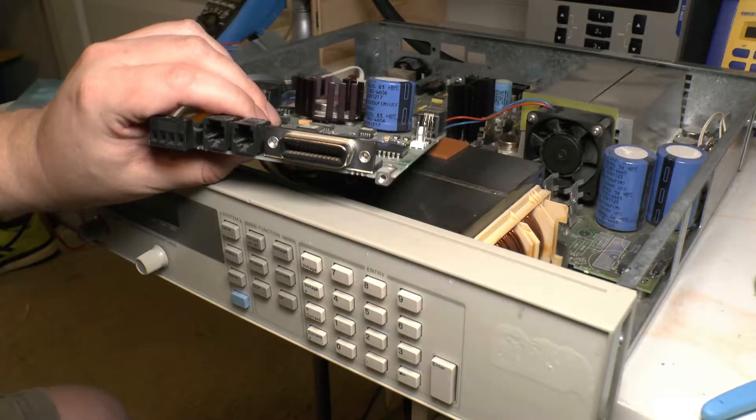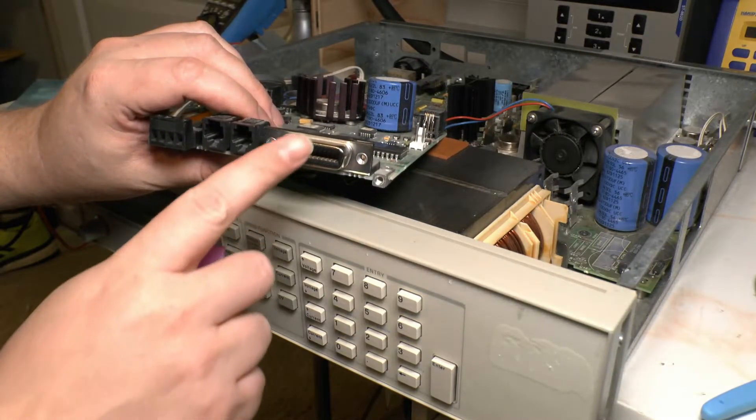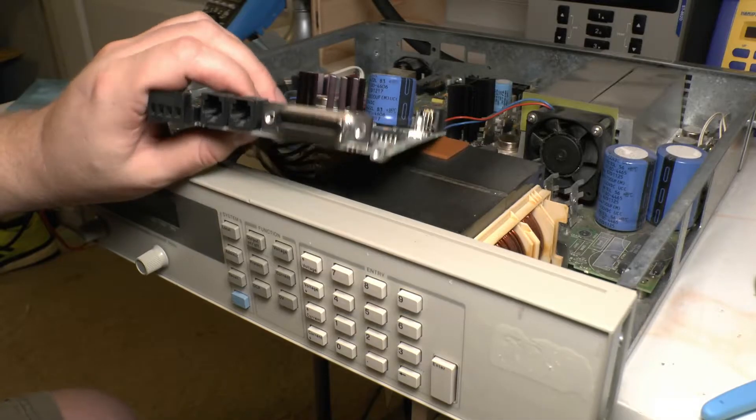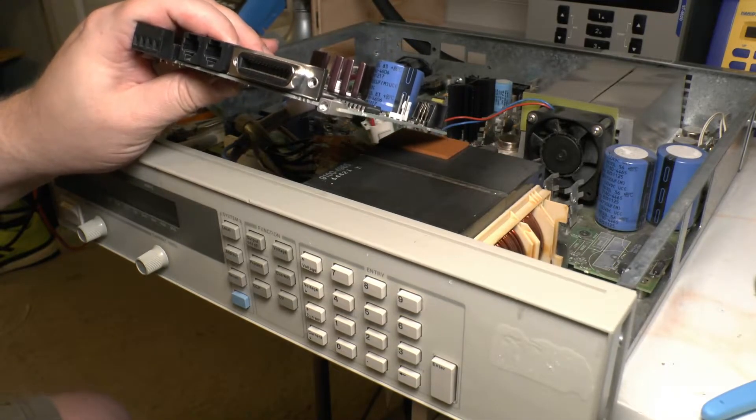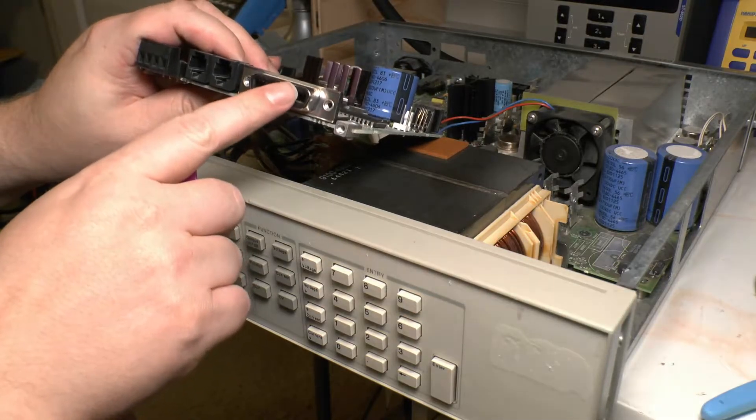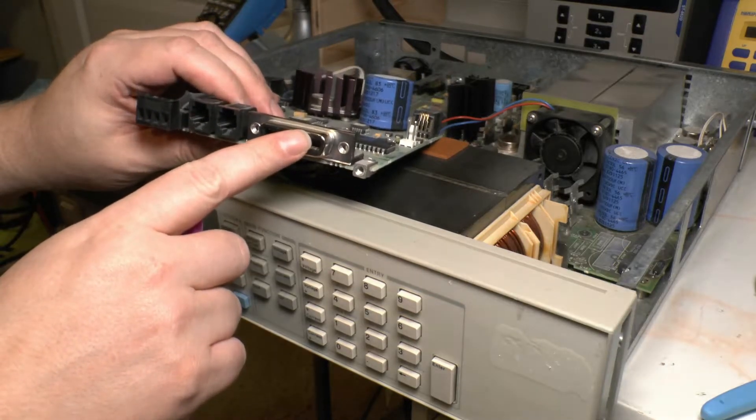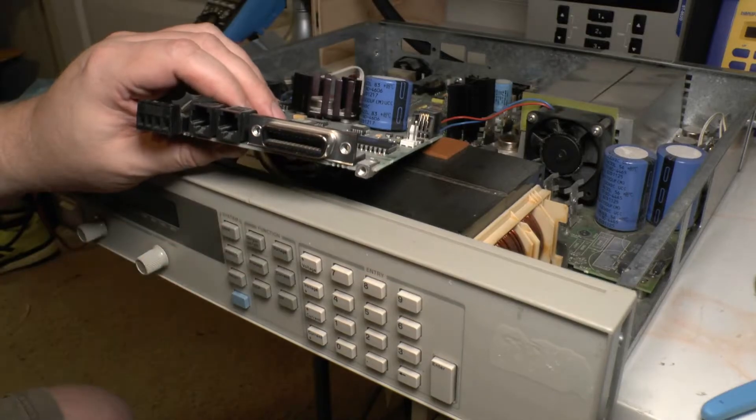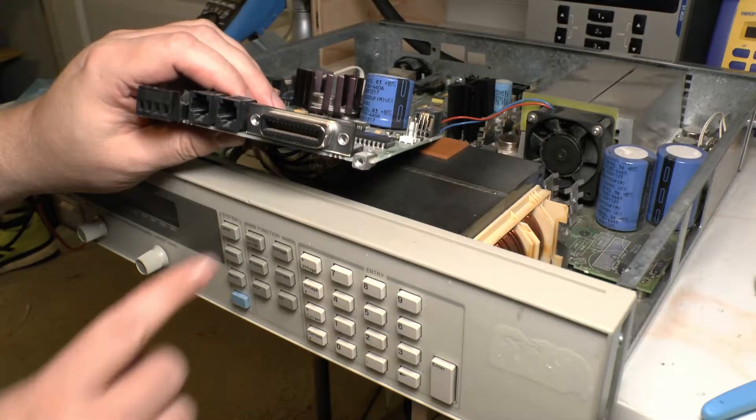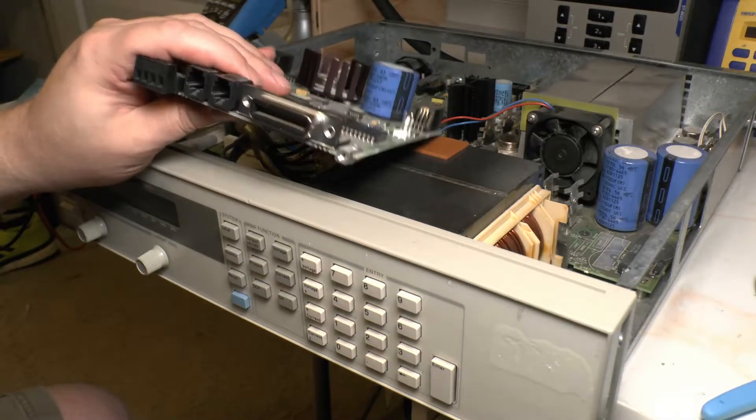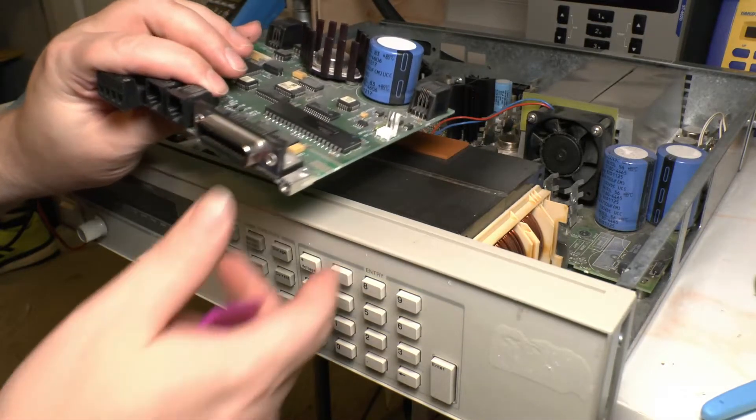If you're a Commodore PET aficionado, you recognize this port. It's actually the exact same connector. My theory as to why the Commodore PET used these is these interfaces are actually really common in electronic manufacturing test equipment. I have an oscilloscope that's made by Tektronix that actually has this interface.